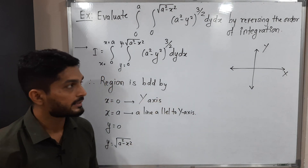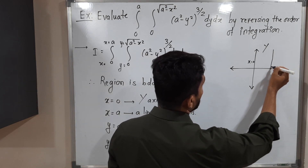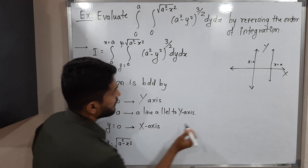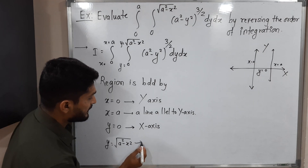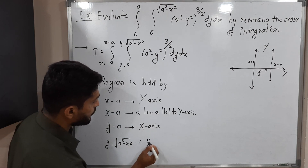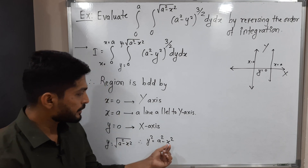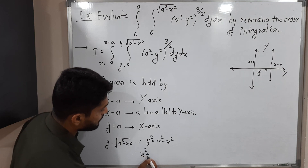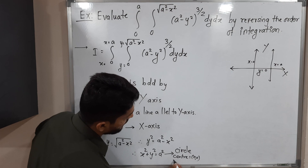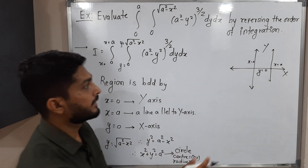Let us draw the diagram simultaneously so we can easily understand. x=0 is the y-axis here, x=a is a line parallel to the y-axis somewhere here. Next, y=0 is the x-axis. For y=√(a²−x²), squaring both sides gives y²=a²−x², which rearranges to x²+y²=a². This is the standard equation of a circle with center (0,0) and radius a.